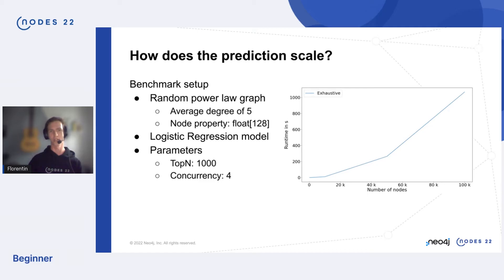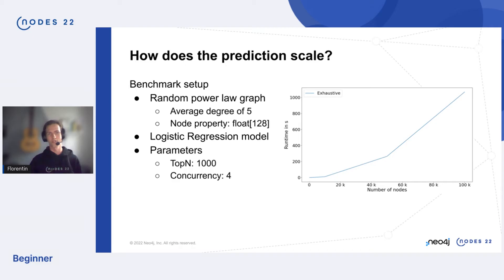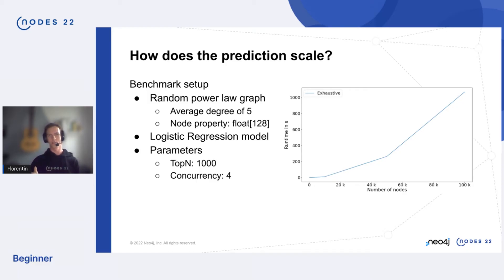Each node also has a property: an embedding of 128 floating-point numbers, which simplifies the benchmark by avoiding complex pipeline steps before the model. The prediction model is logistic regression — a fast model compared to random forest. We're looking for the best 1,000 predictions in the input graph using concurrency 4, the maximum available in the community edition.